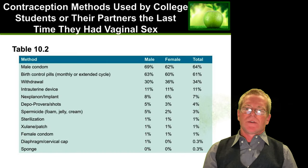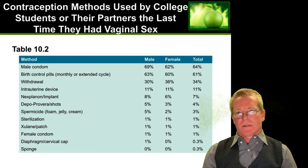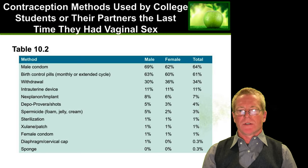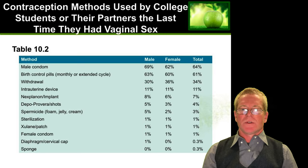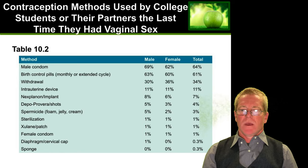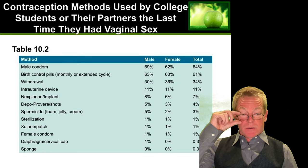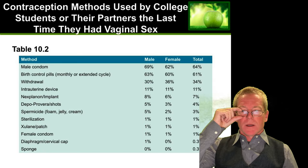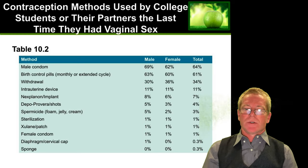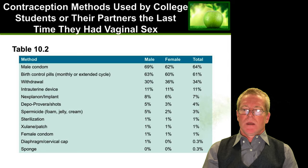This slide shows methods of contraception currently used by college students in a survey. The highest or most frequent choice was the male condom, and birth control pills were also pretty popular. Unfortunately, withdrawal is used all too often. Intrauterine devices account for around 11% of the total, and some patches and implants are also used.